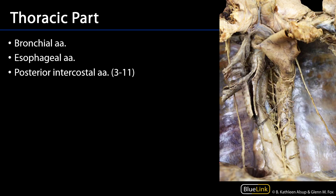Here's a view of the thoracic aorta reflected away from the body wall. There's the ascending aorta, there is the arch of the aorta, and here is that thoracic part of the aorta. We can see a collection of arteries here that are all going toward the posterior body wall — these are going to be posterior intercostal arteries.